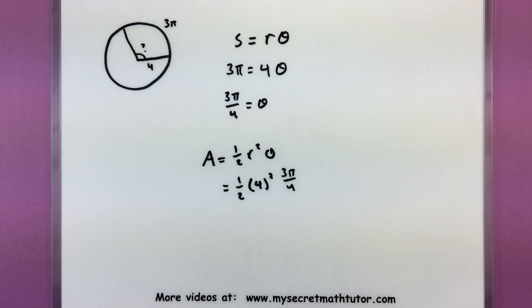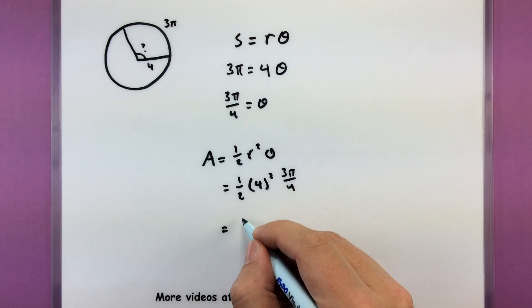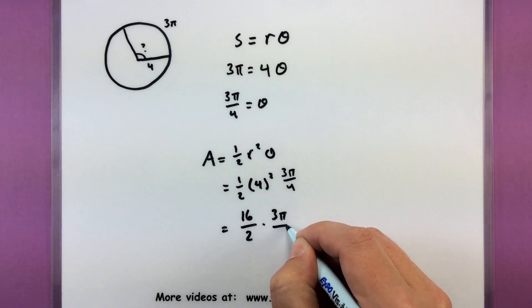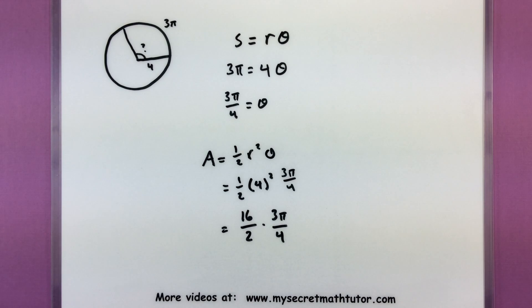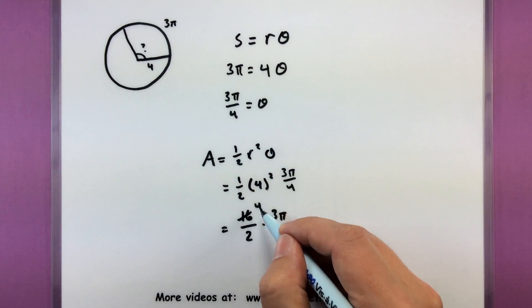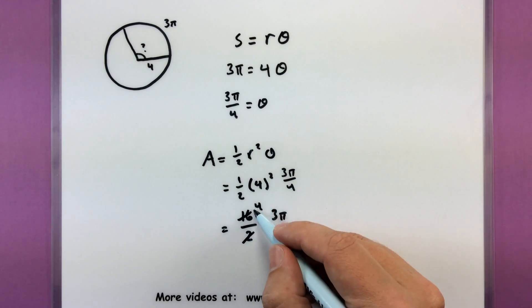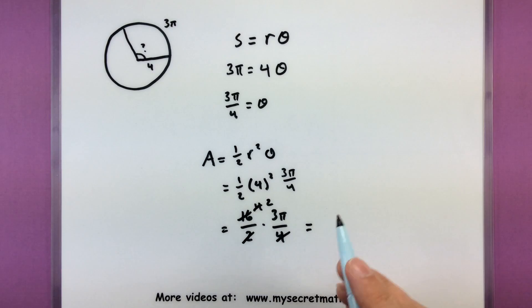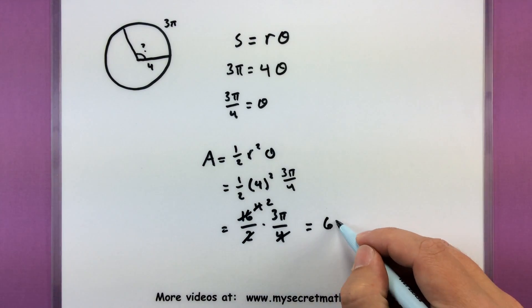And now we work to simplify this. So 4 squared is 16, that'll be divided by 2, 3π divided by 4. Let's go ahead and cancel out some extra terms in here. 4 goes into 16 four times. Then 2 goes into 4 twice. And so it looks like the only thing we have left is just the 2 times the 3, or 6π.